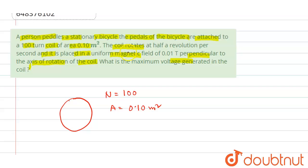A person pedals the bicycle which in turn rotates this coil and the frequency of the coil is also given. Frequency is half a revolution per second.